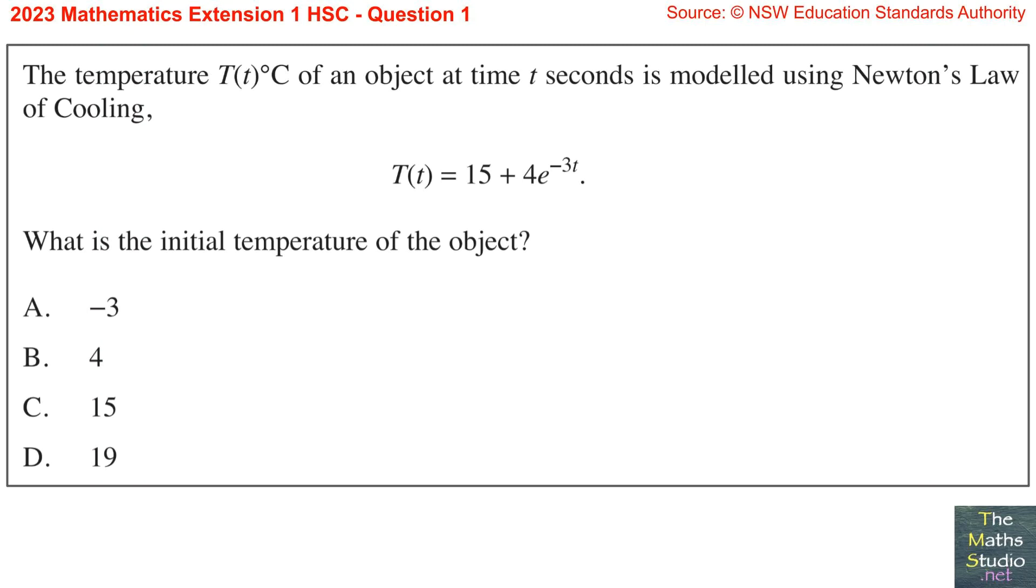Question 1. The temperature, T(t)°C of an object at time t seconds is modelled using Newton's law of cooling. T(t) equals 15 plus 4 times e to the power of negative 3t. What is the initial temperature of the object?